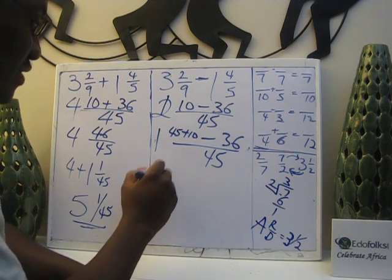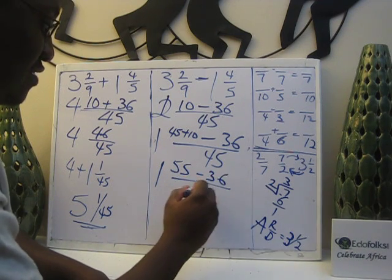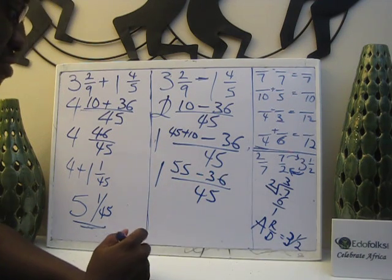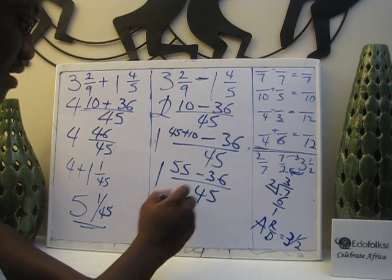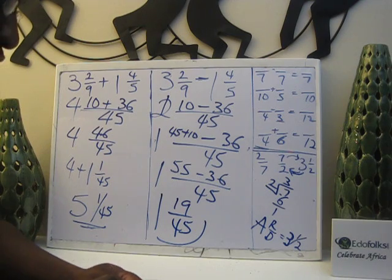So I now have one whole number, fifty-five minus thirty-six over forty-five. And that end result will be one whole number, nineteen over forty-five. That's how you subtract and add fractions.